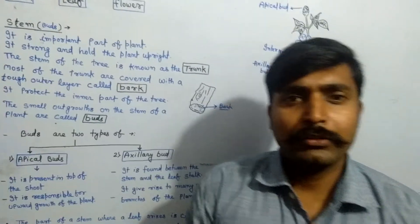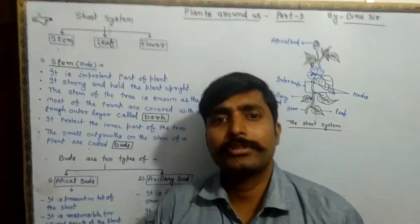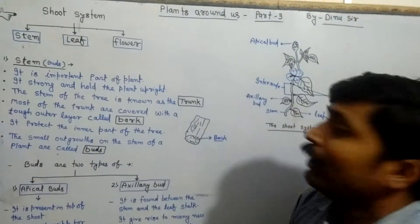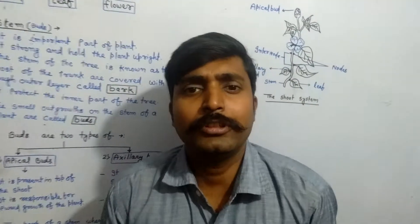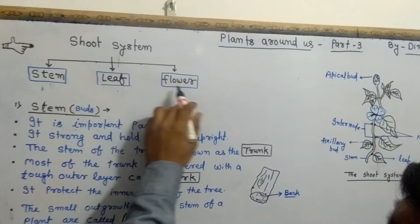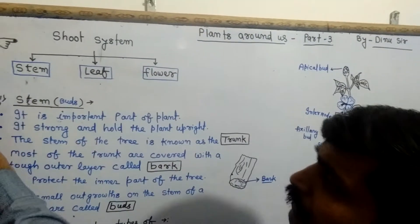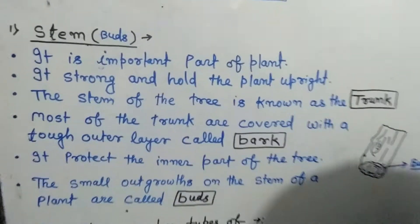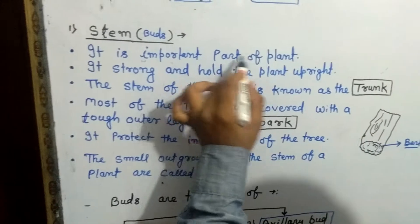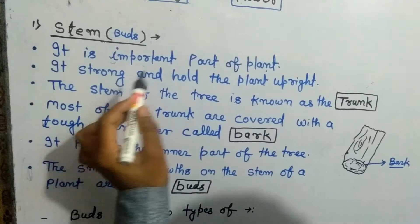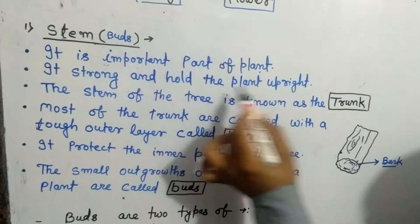Today I am going to start Part 3: Plants Around Us. Let us look at the root system, stem, leaf, and flower. The stem is an important part of the plant — it is strong and holds the plant upright.